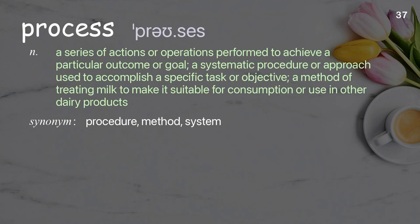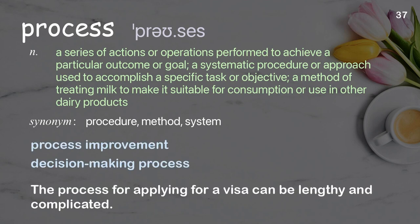Process: a series of actions or operations performed to achieve a particular outcome or goal; a systematic procedure or approach used to accomplish a specific task; a method of treating milk to make it suitable for consumption. Examples: process improvement, decision-making process. The process for applying for a visa can be lengthy and complicated.